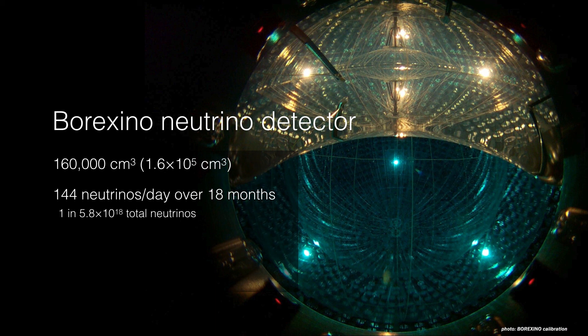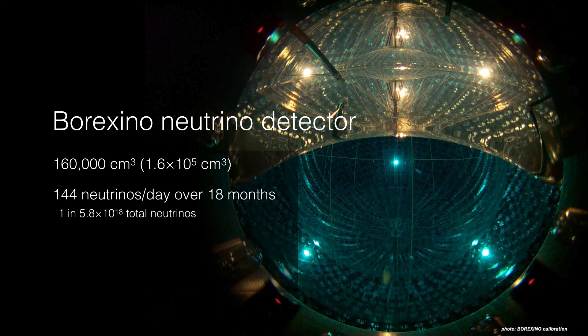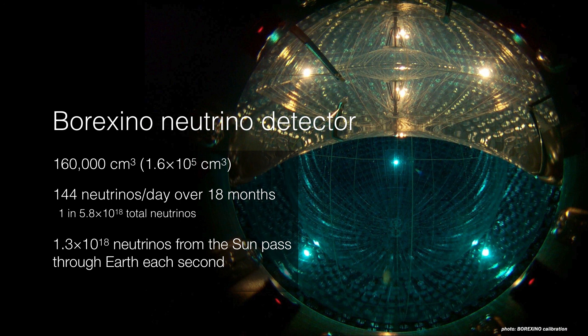That works out to about one in 6 million trillion total neutrinos that pass through the detector. That's a very small amount. Remember, 1.3 million trillion neutrinos pass through the Earth every second. About 100 trillion neutrinos are passing through you right now, every second as we speak. Neutrinos are rare, but they confirm our understanding of how the sun shines.